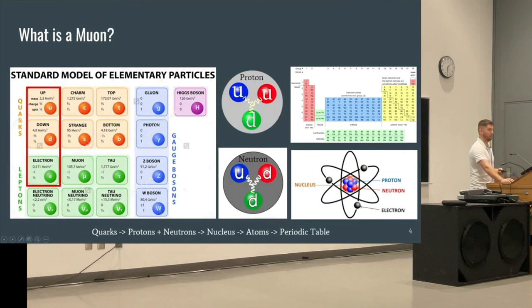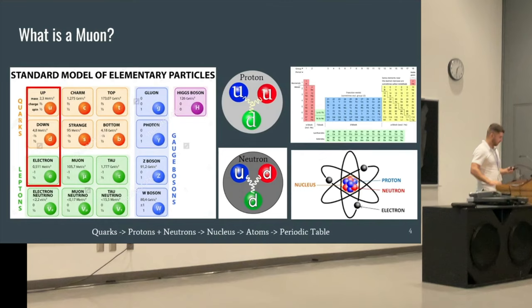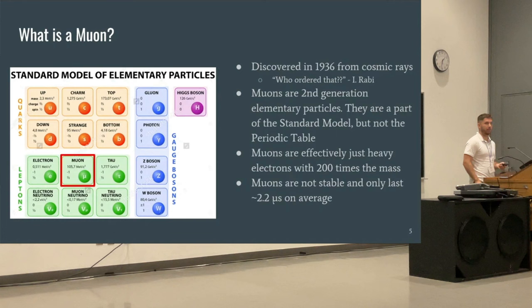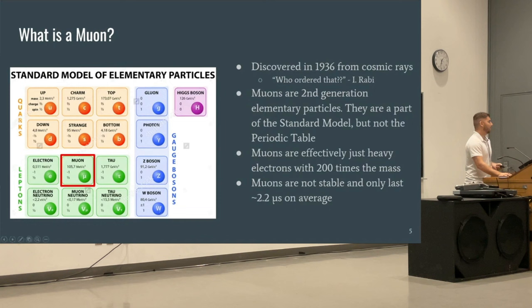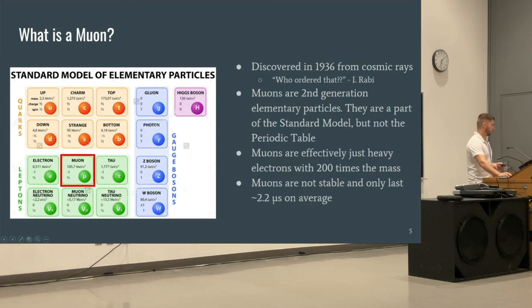That leads to the standard model of particle physics, which classifies all known particles. Really, all elements are made up of three main fundamental particles: the up quark, the down quark, and the electron. But in particle physics there are many more particles, and one of them is the muon. Muons were discovered in 1936 from cosmic rays, and the discovery was so shocking that a Nobel laureate famously said, 'Who ordered that?' Muons are second-generation elementary particles — basically a second-generation electron — and they have 200 times the mass.